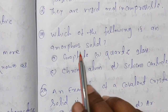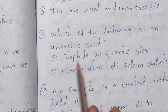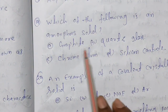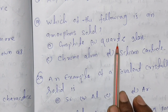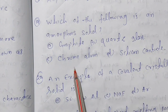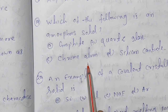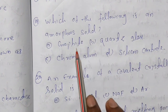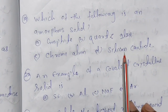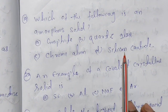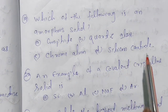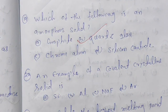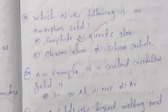Question 19: which of the following is an amorphous solid? The options are graphite, quartz glass, chrome alum, or silicon carbide. Graphite, chrome alum, and silicon carbide are all crystalline solids. So quartz glass is the amorphous solid.